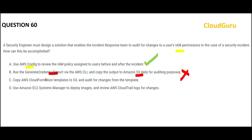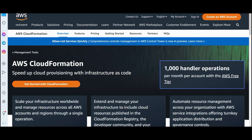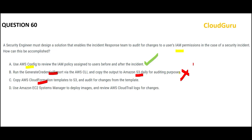Option C is talking about CloudFormation. CloudFormation is an infrastructure-as-code service, similar to Terraform — it helps you create infrastructure from code. When you want to create an environment similar to dev, you can write code and within half an hour have a new environment. That is not the requirement here, so C is wrong.